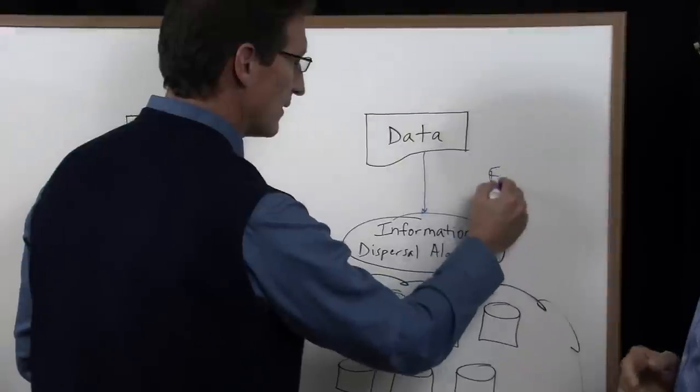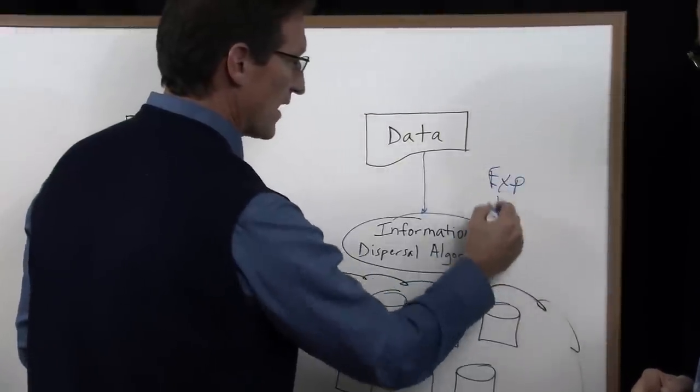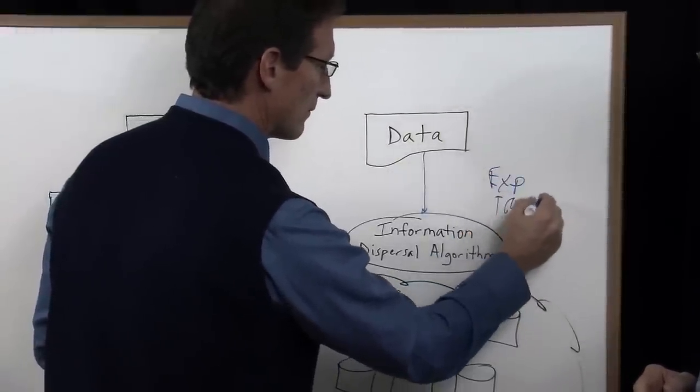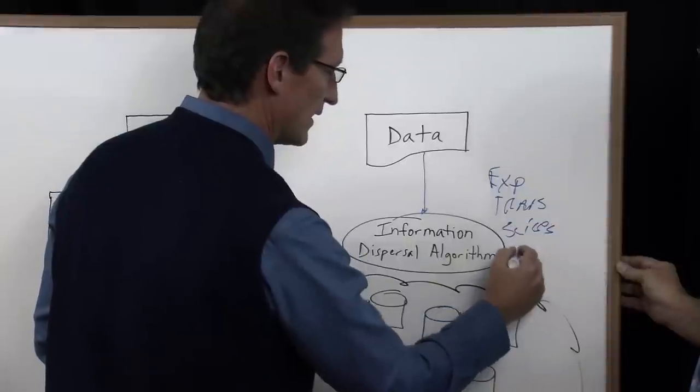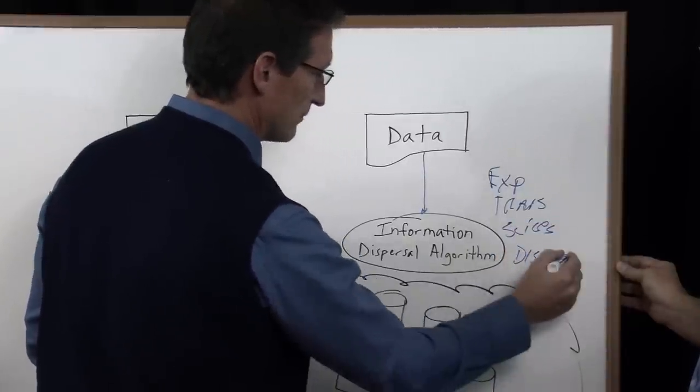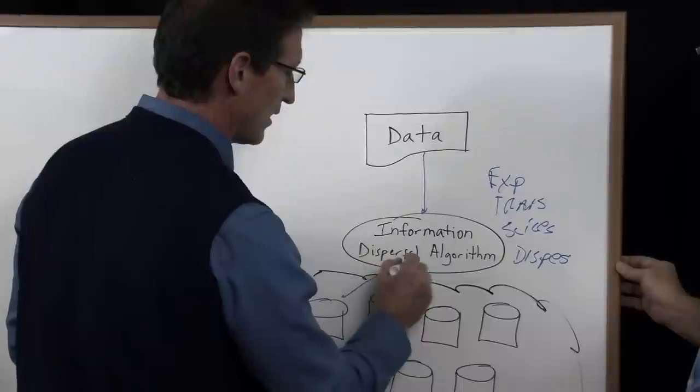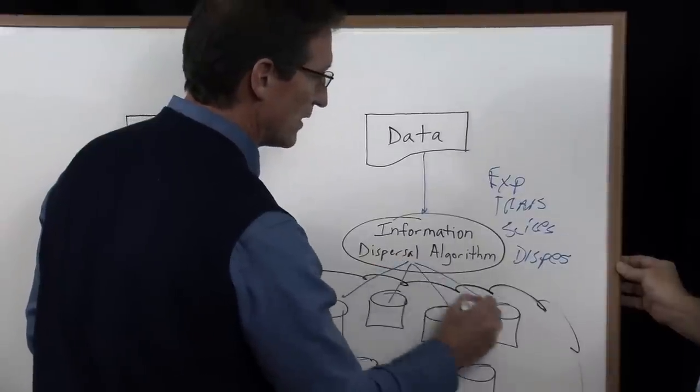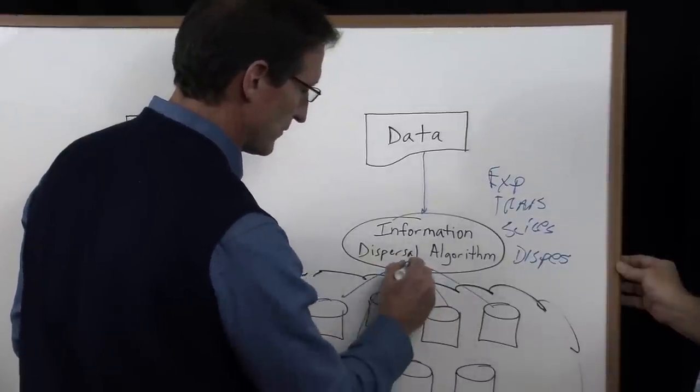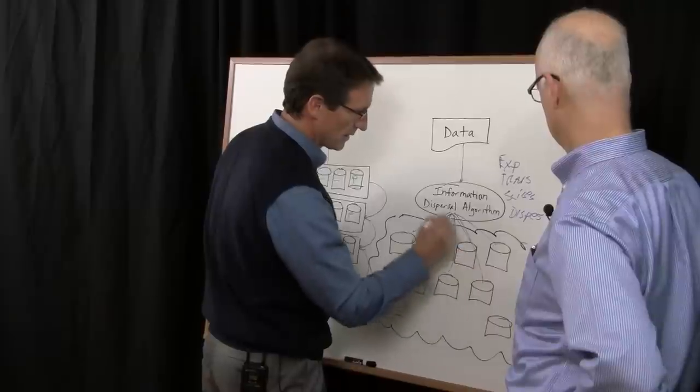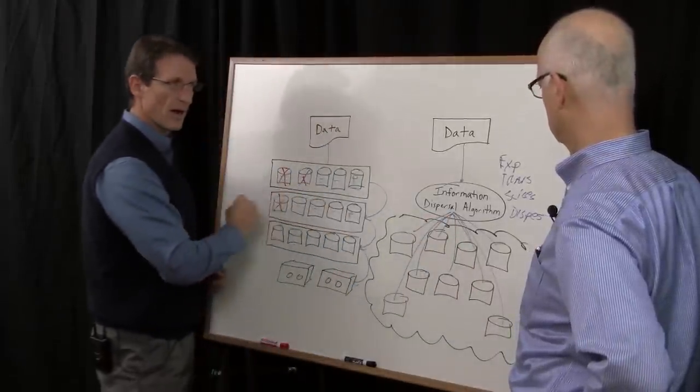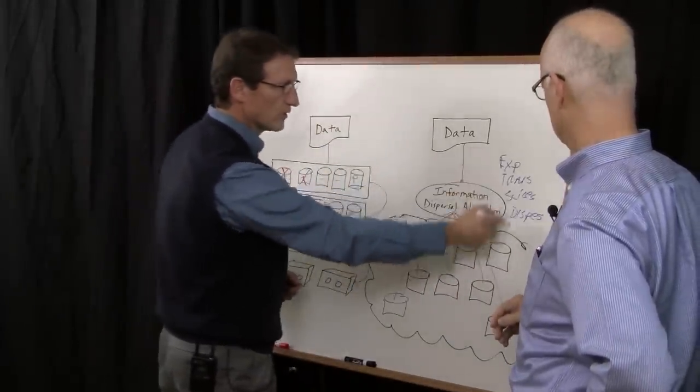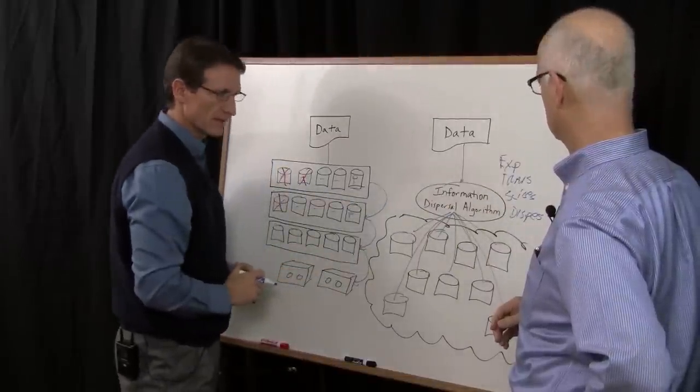It slices the data and then it disperses the data across a network of storage nodes that could exist in a cloud. So rather than striping data across drives like RAID, it's going to go through this process with every piece of information that comes into the system.